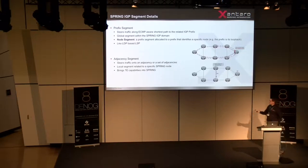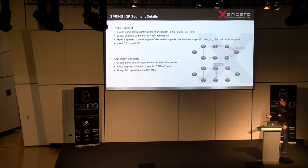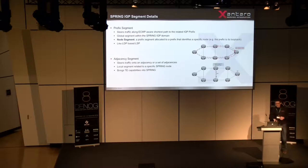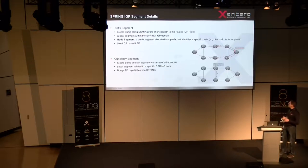The other type is the so-called adjacency segment. In this case, a router — R5, for example — assigns a label for traffic going to R4, and R4 does a similar thing. Let's take a closer look at these two examples.